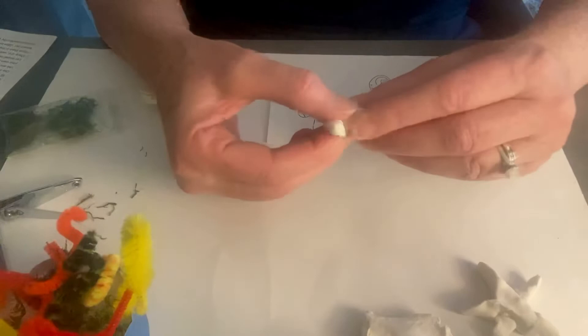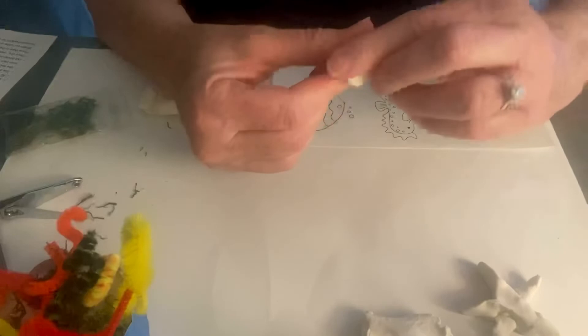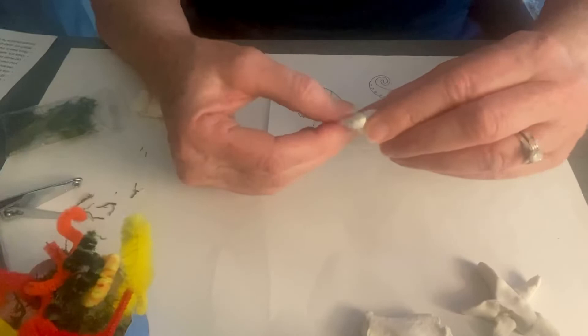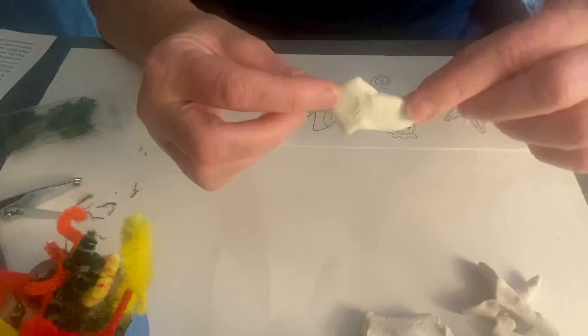Kind of mold this together. The nice thing about Model Magic is it's very moldable. You can start all over, roll it into a ball. Go ahead and make your fish. Maybe I'll make one that looks a little bit like a goldfish. Look like a little goldfish.